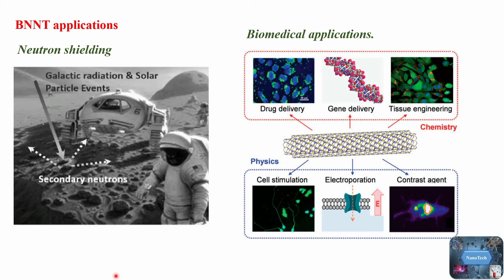Boron neutron capture therapy is a selective radiotherapy where boron atoms are used to absorb low-energy thermal neutrons, which then spontaneously decay to produce a helium alpha particle and lithium. In principle, it has the potential for effective treatment of many forms of cancer. The current trend of potential BNT applications in nanomedicine includes drug delivery, gene delivery, scaffold for tissue engineering, and bioimaging applications. Thank you for watching — see you soon with another interesting topic.